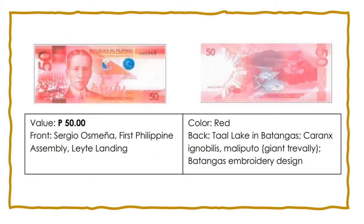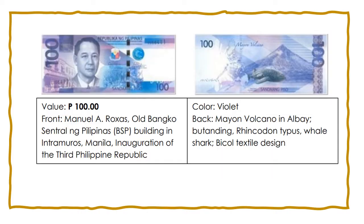Moving to the 50-peso bill, we have Sergio Osmeña, the 1st Philippine Assembly, and the Leyte Landing in front. Its color is red. At the back, you would see the Taal Lake in Batangas, the Giant Trevaly, and the Batangas embroidery design. On the 100-peso bill, in front is Manuel A. Roxas, the old Bangko Sentral ng Pilipinas building in Intramuros, Manila, and the inauguration of the 3rd Philippine Republic. Its color is violet. At the back, you would see the famous Mayon Volcano in Albay, the Potanding, and also the Bicol textile design.